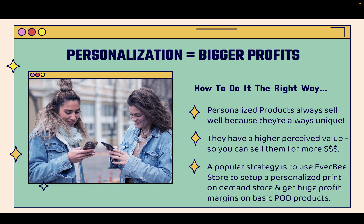We're going to sell typical print-on-demand products, but we're going to be able to charge a whole lot more because they're going to have higher perceived value with our customers because they're going to be fully personalized. A really popular strategy I'm going to walk you through step-by-step in this video is to use Everbee Store to set up a personalized print-on-demand store and get huge profit margins on very basic print-on-demand products. It's super powerful.